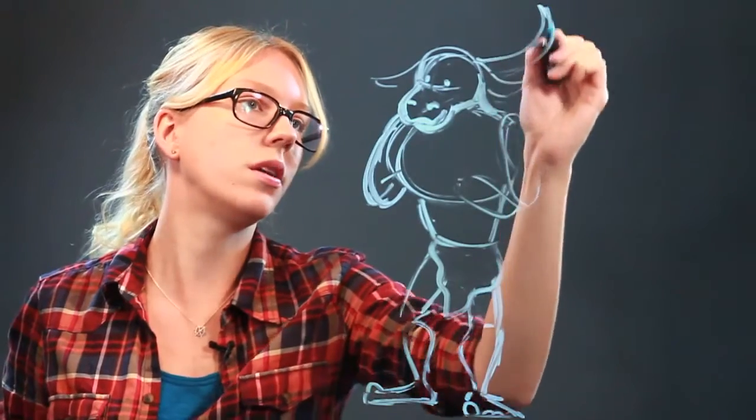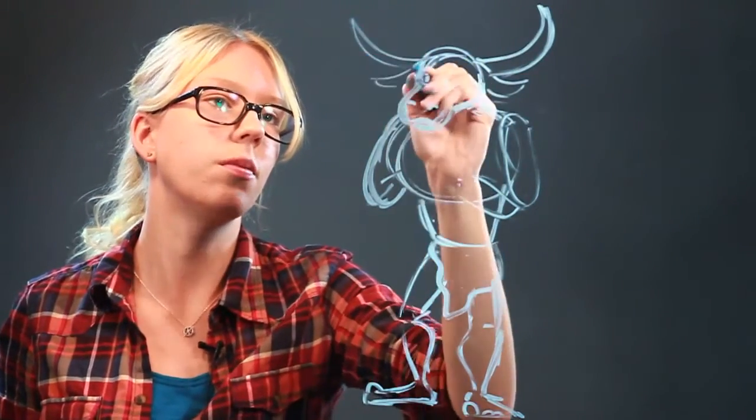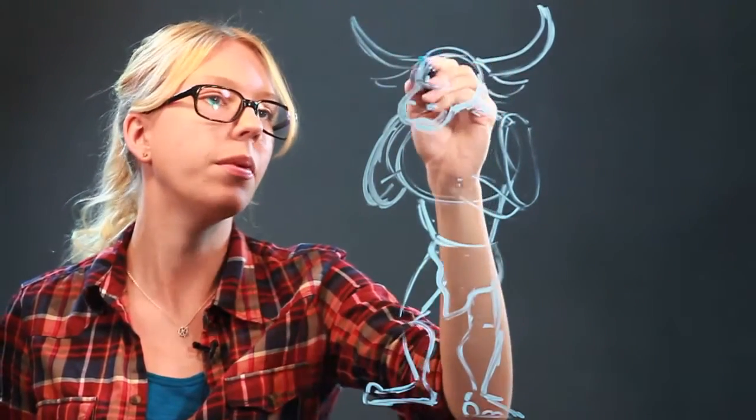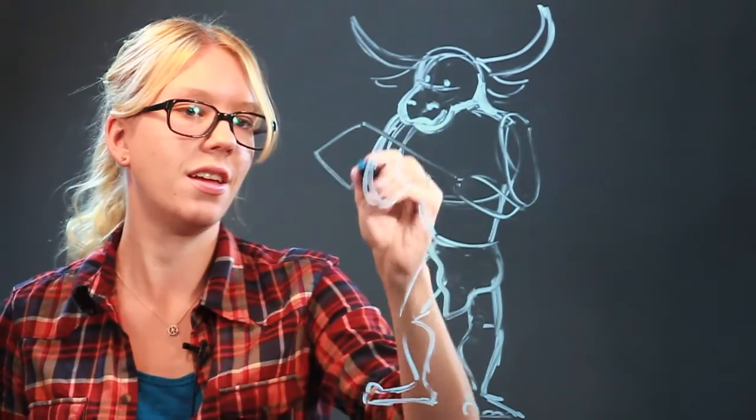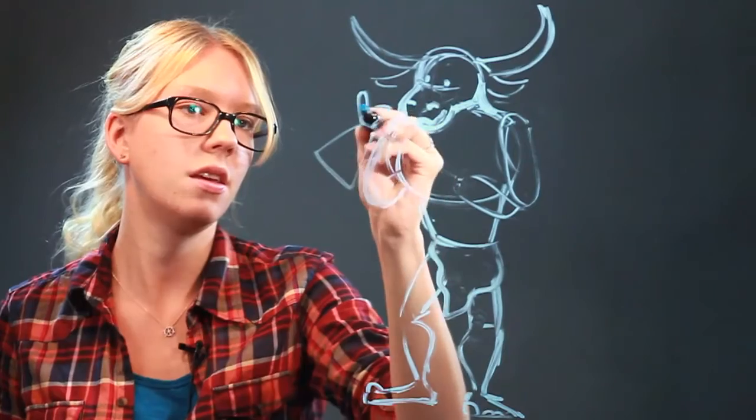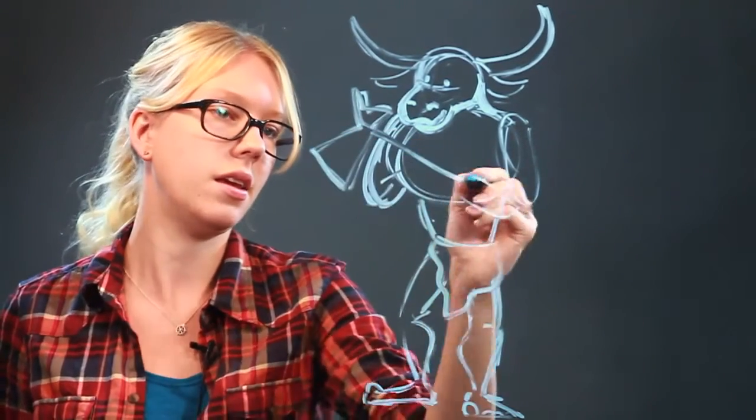Some horns. Just draw some crescent moon shapes coming up. And then we put through a big axe. And you can put any sort of weapon in his hands.